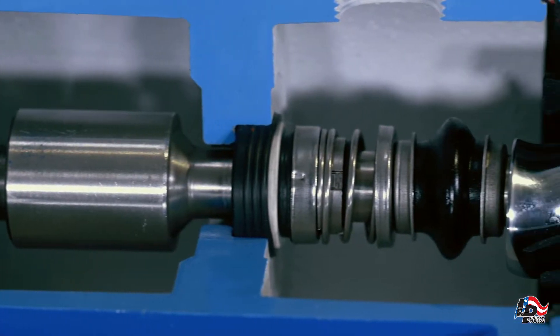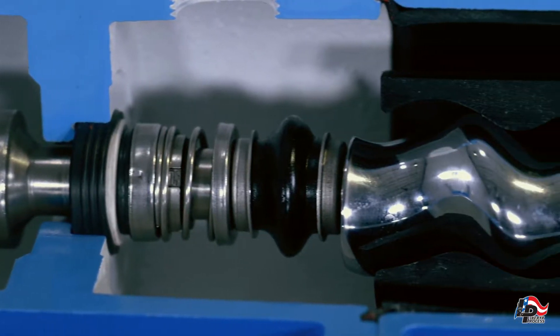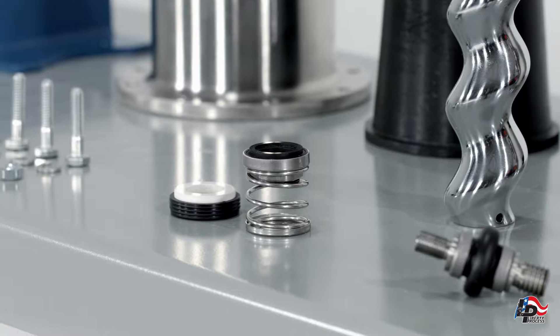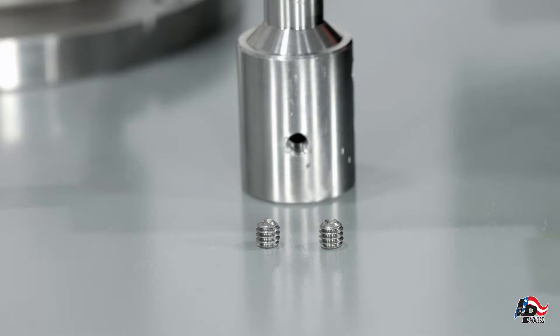This pump is sometimes called a wobble stator pump. The same pump disassembly procedures are also used for Liberty Process APM pump sizes 15, 22, and 33.